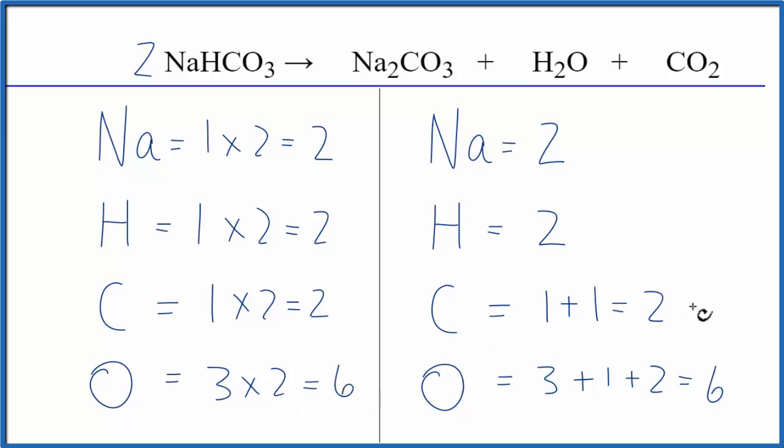This equation is balanced. If you had problems it may have been counting that we have two carbons, or perhaps the three plus the one plus the two. You have to make sure you count all of the oxygen atoms.